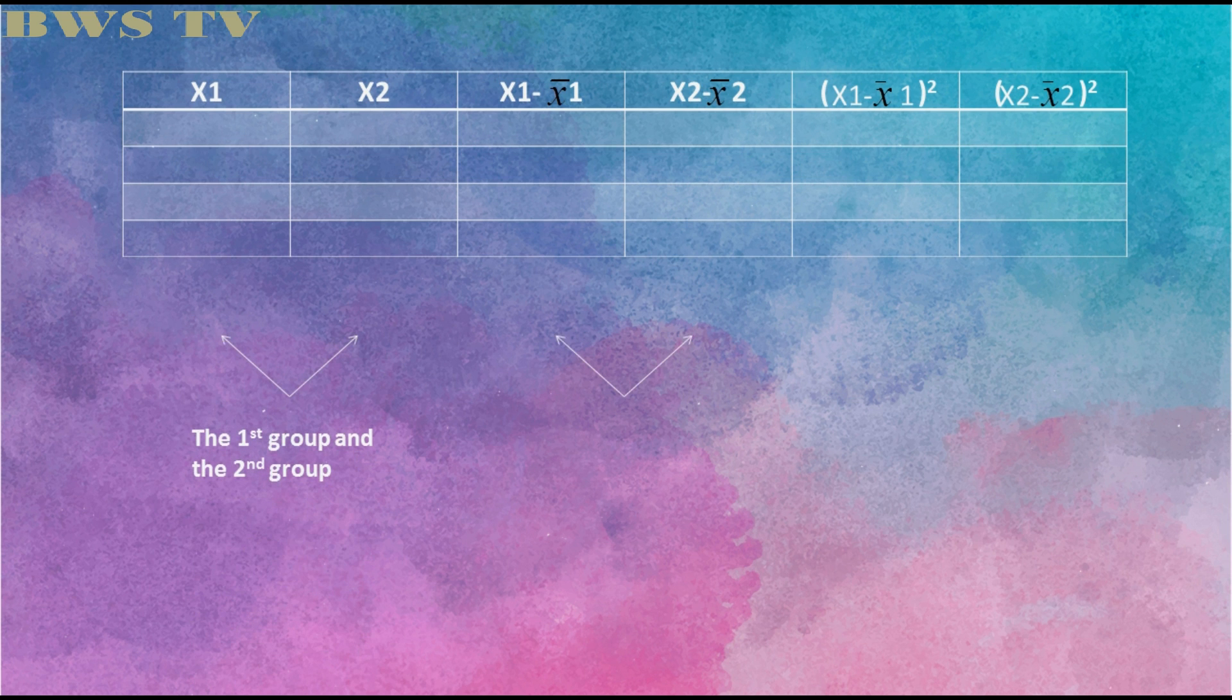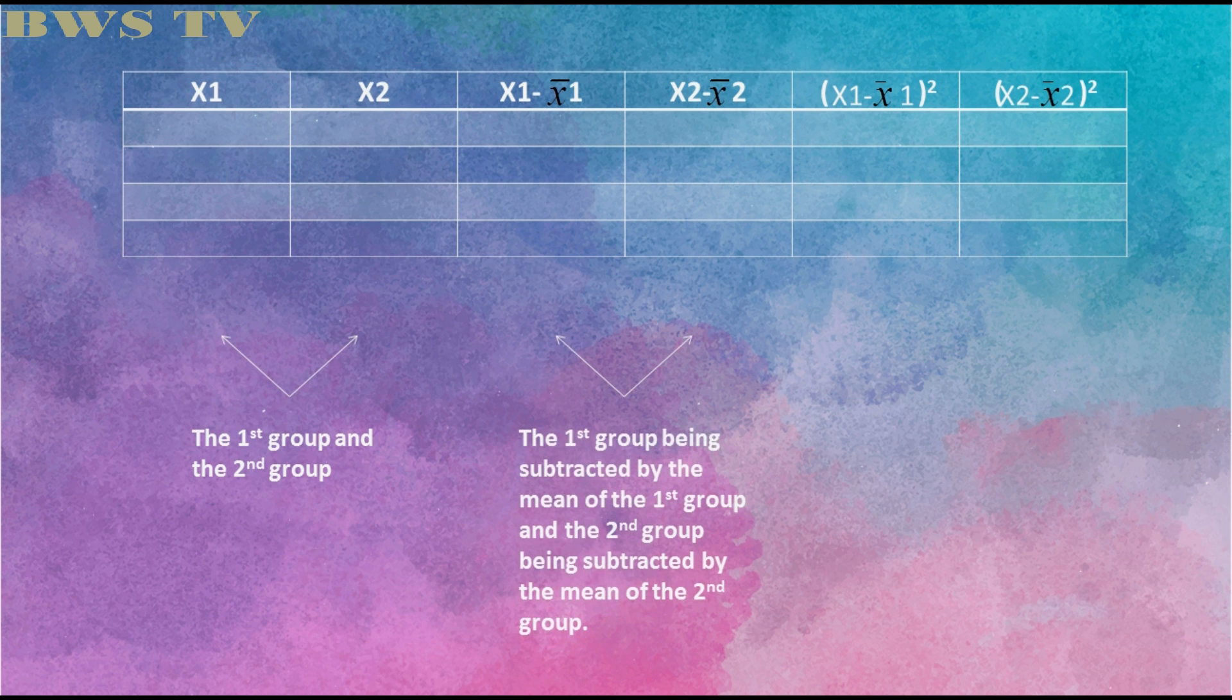Now, before we get the mean, we have to get the population of the first group. Next we add all the given and the sum will be divided by the population to get the mean. Then do the same thing in the second group.